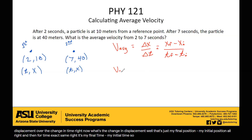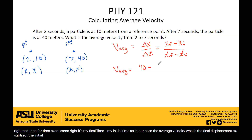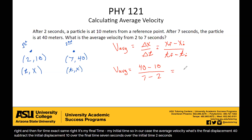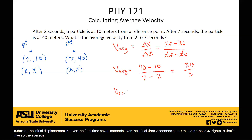So in our case, the average velocity: what's the final displacement? 40, subtract the initial displacement, 10, over the final time, 7 seconds, minus the initial time, 2 seconds. So 40 minus 10 is 30, and 7 minus 2 is 5. Therefore, the average velocity is equal to 6 meters per second.